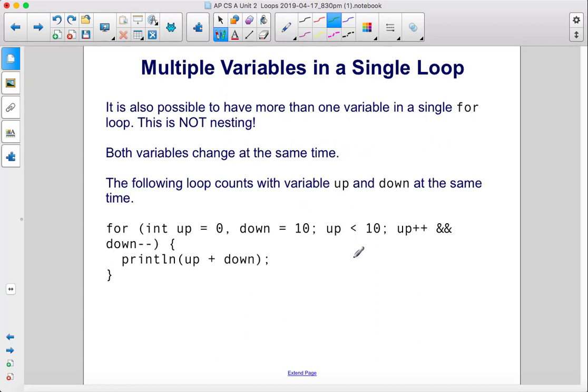Both variables change at the same time. The following loop counts with variable up and down at the same time. So we have up and down, the condition is while up is less than ten, and after each iteration, up will increase by one and down will decrease by one.